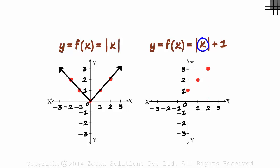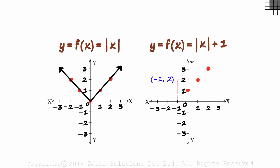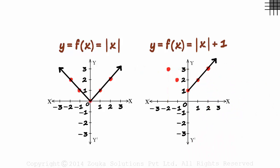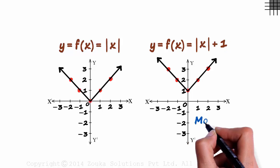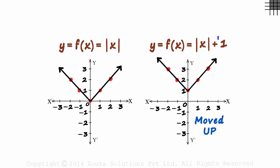If x is minus one, then y will be the absolute value of minus one plus one, which is two. Minus one comma two is the point. And minus two comma three will be another point. This is how the graph will look. Notice what happened — we added a constant to the function and the graph moved up. We added one and the graph moved up one unit.